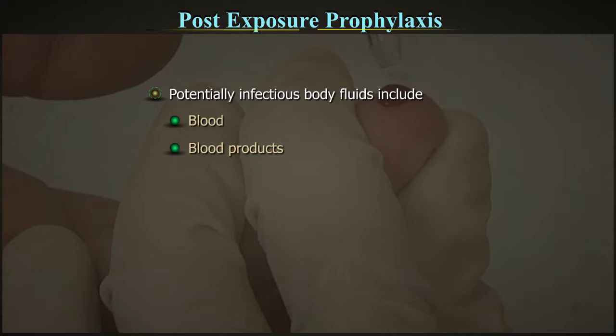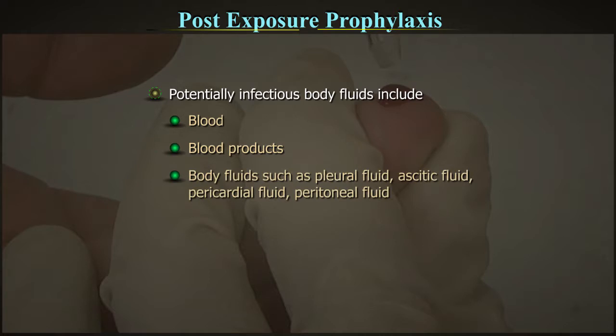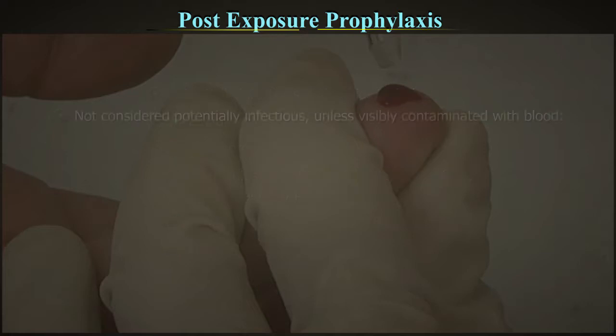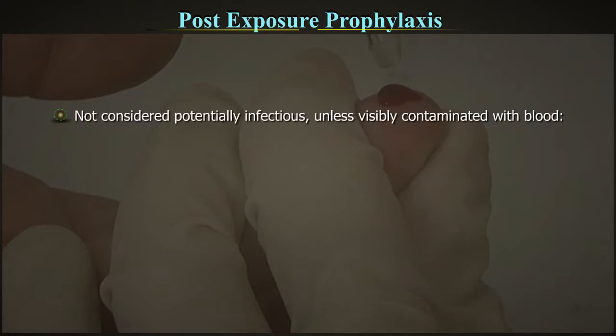Potentially infectious body fluids include blood, blood products, all body fluids, pleural fluid, pericardial fluid, peritoneal fluid, semen and vaginal secretions. The following are not considered potentially infectious unless visibly contaminated with blood: feces, nasal secretions, saliva, sputum, sweat, tears, urine and vomitus. Transmission through intact skin has not been documented.